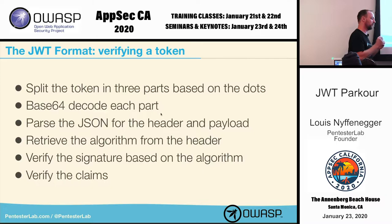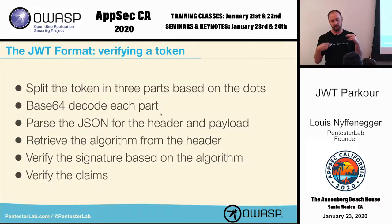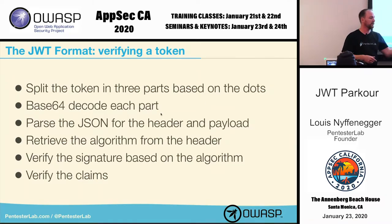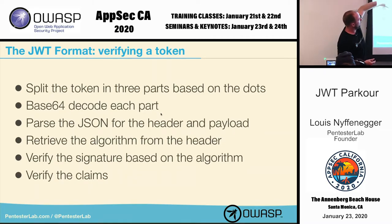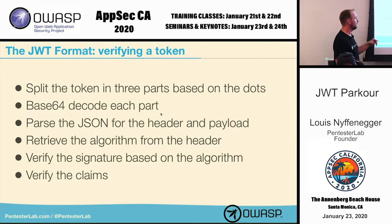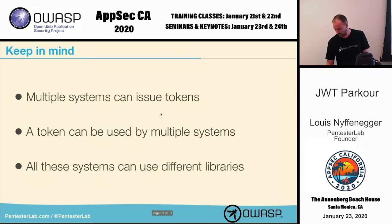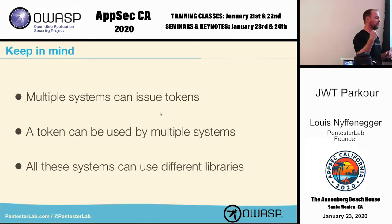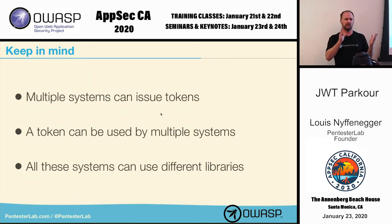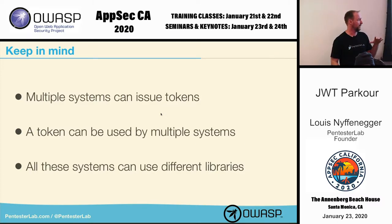When verifying a token, you get the token, split it into three parts, base64-decode each part, parse the JSON, retrieve the algorithm from the header, and do the crypto to verify everything is correct. You have a large attack surface here, which is one of the big problems with JWT. Once the signature is verified, you verify the claims — for example, is the token still valid? Keep in mind multiple systems can use tokens, so test against every microservice since some may have different behavior.